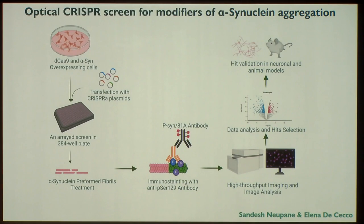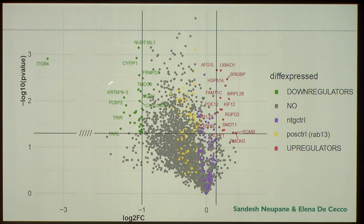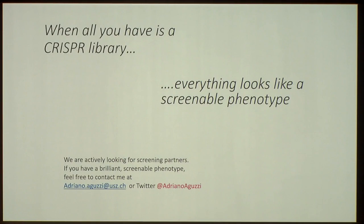We are also running optical screens. Here we are doing an optical screen for modifiers of synuclein aggregation. The negative controls are non-targeting, and the positive control is RAP13, but you actually already find a bunch of genes that have a much stronger effect than the alleged positive controls. So we think this is really powerful. Bottom line: when you have a CRISPR library, pretty much everything looks like a screen for phenotypes. Currently, we are screening everything that moves.